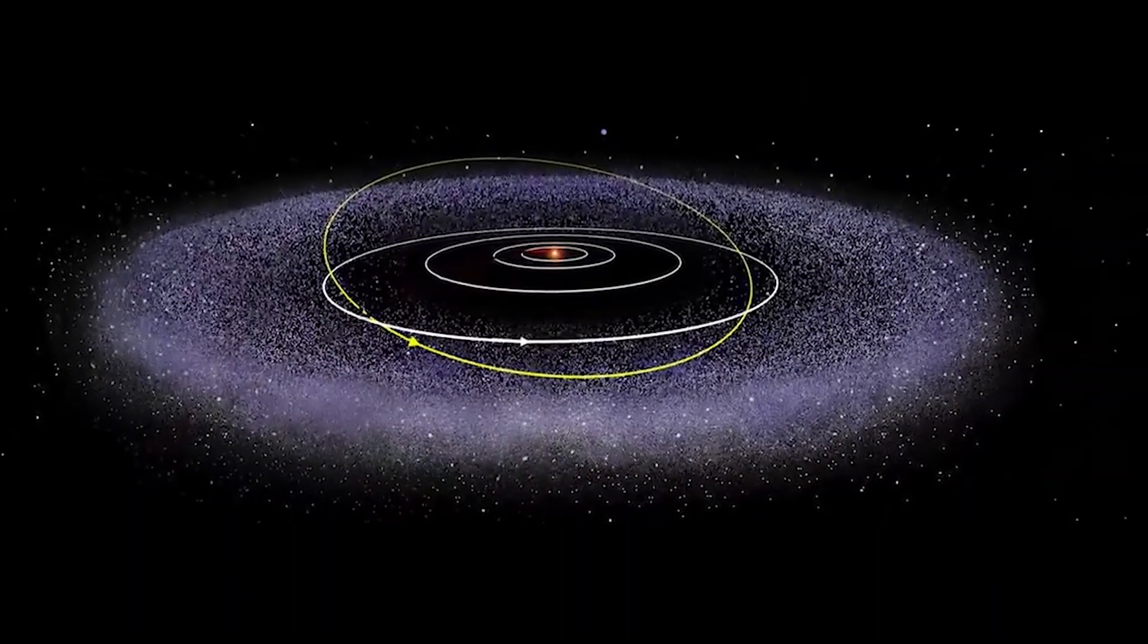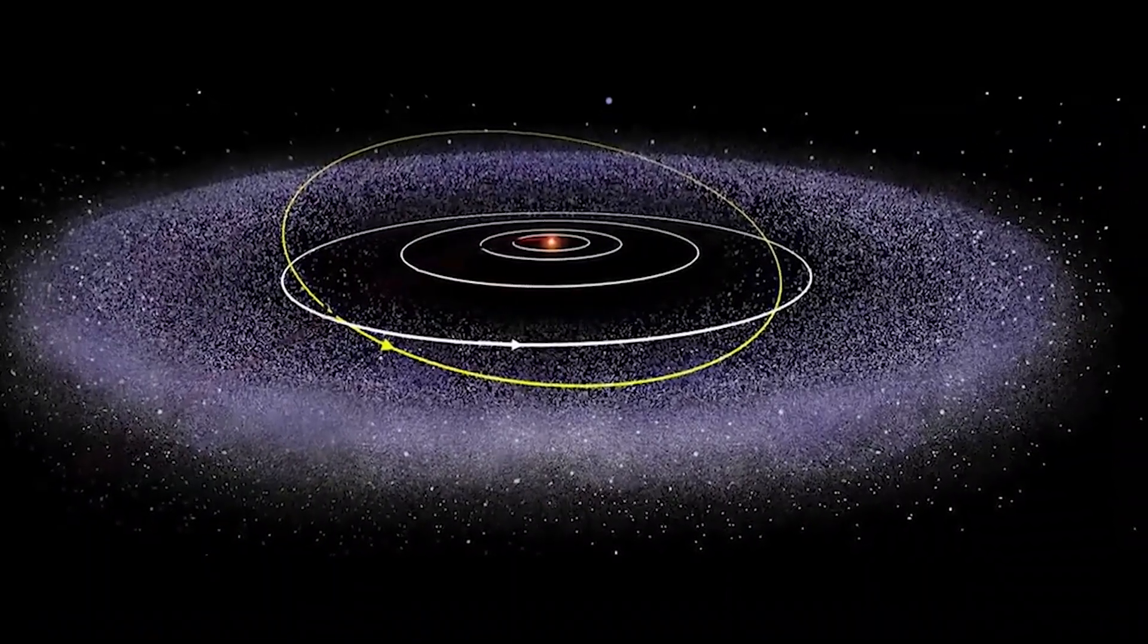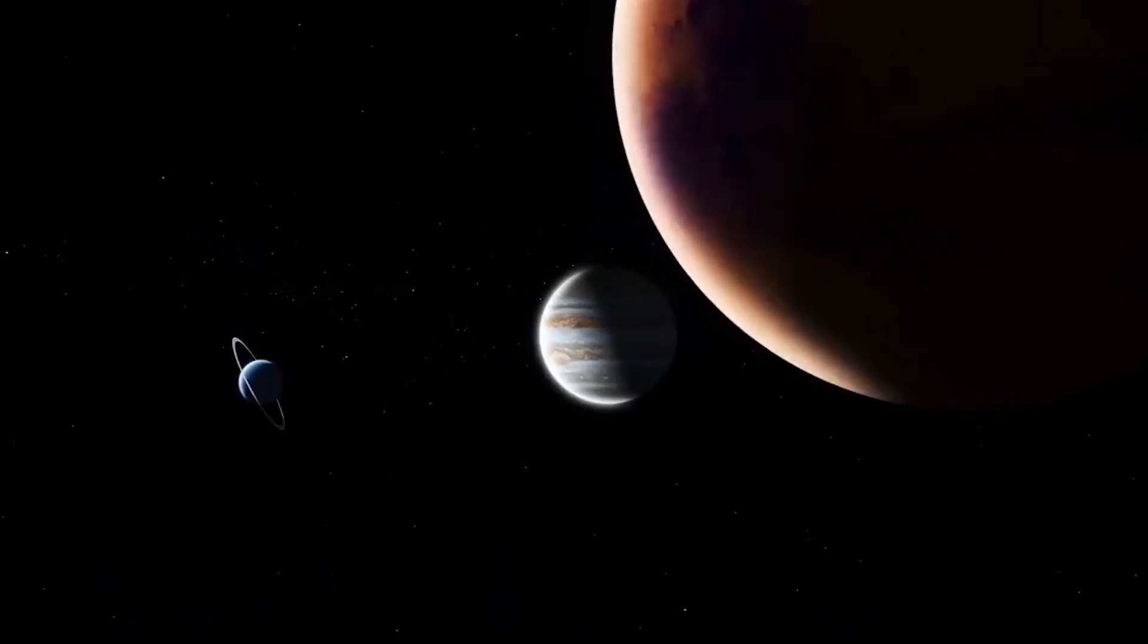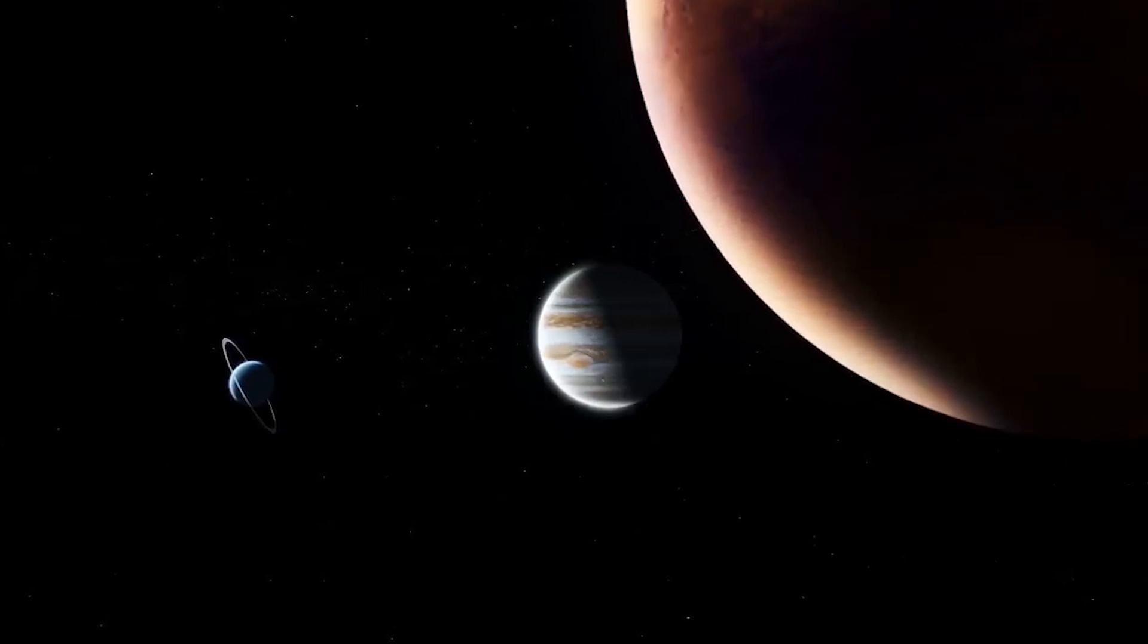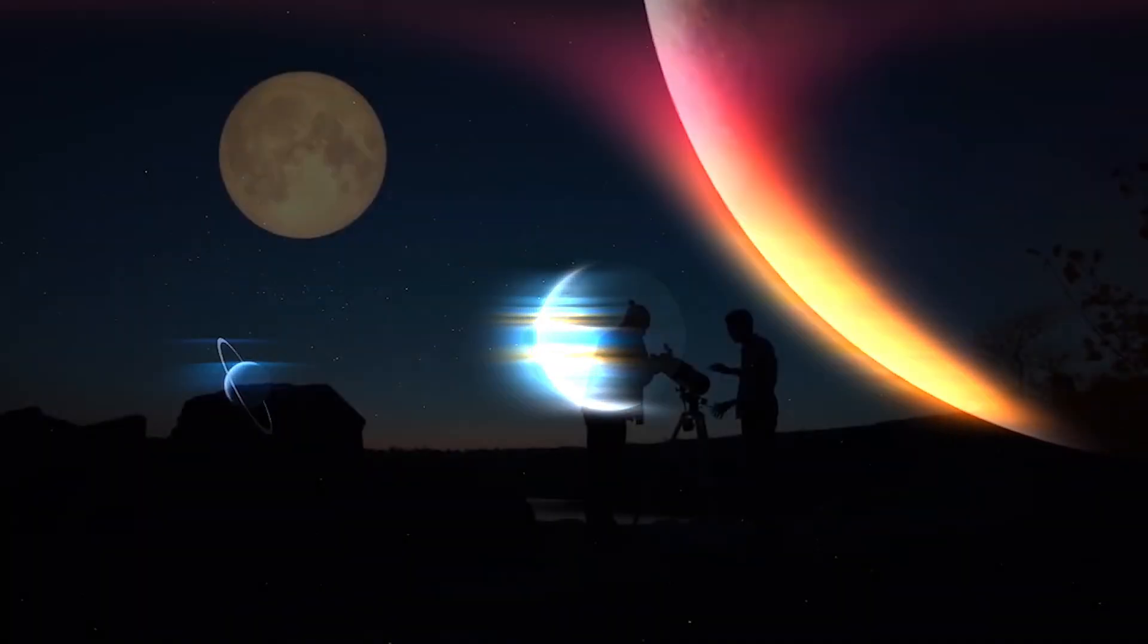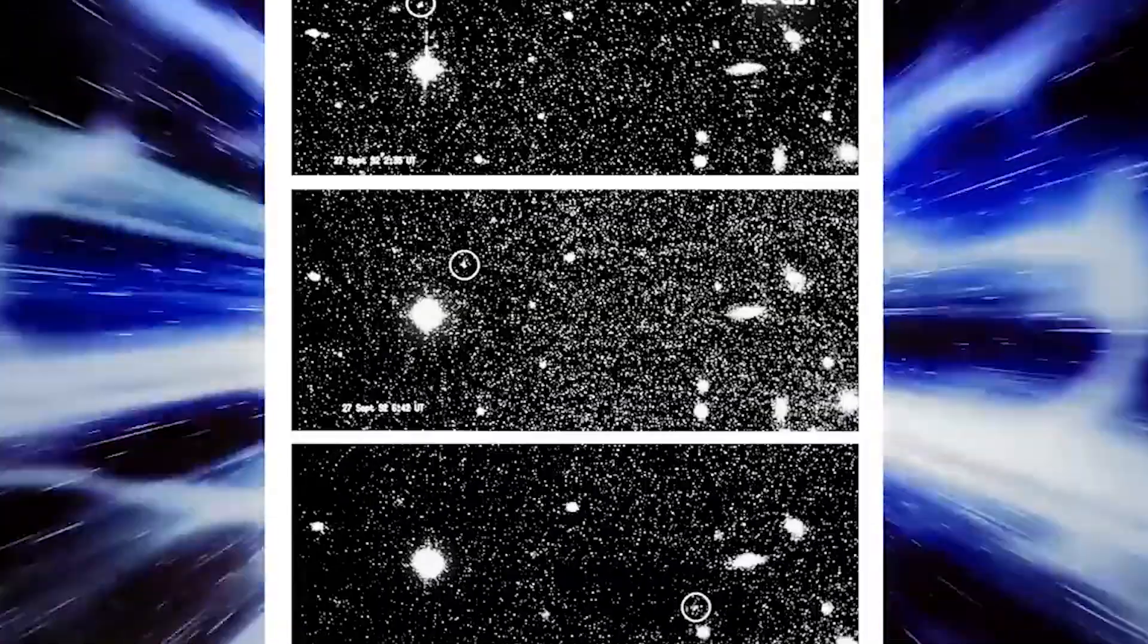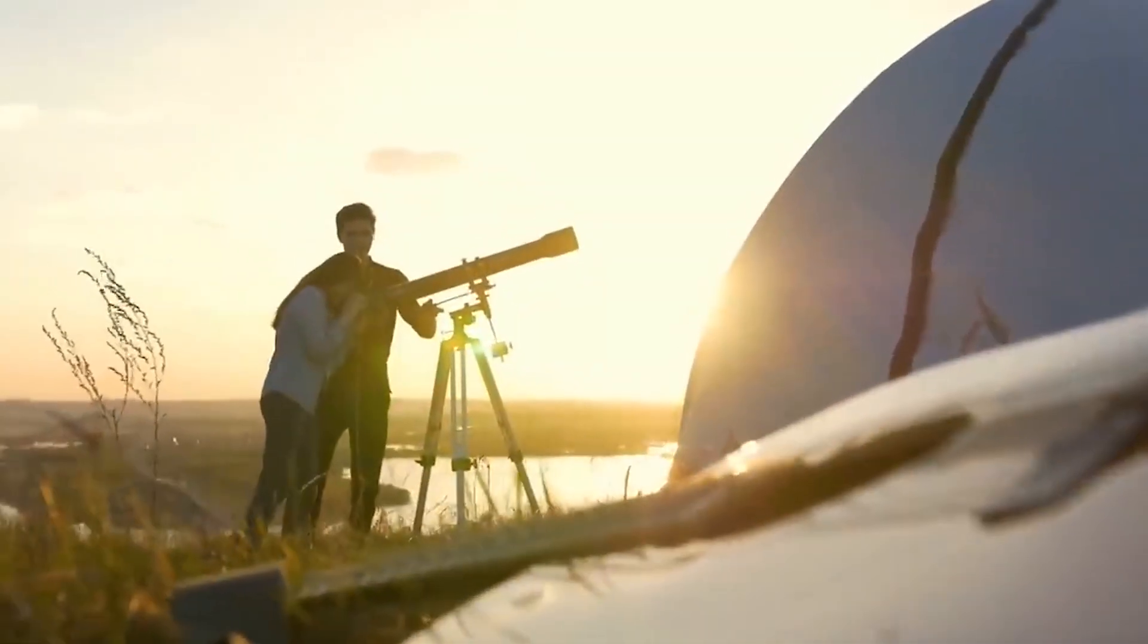Another challenge that scientists faced was accurately predicting the position of the planet. As previously mentioned, planet Zeno has a highly elliptical orbit, meaning that it moves in a non-uniform path around the sun. Scientists had to calculate its position based on its unlikely movements and the influence of the gravitational pull of neighboring objects in the Kuiper Belt.